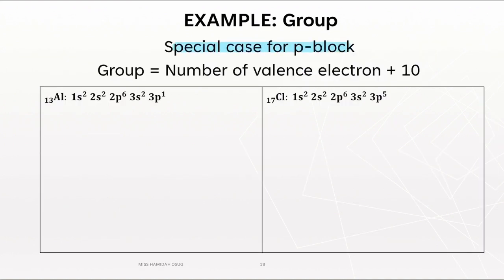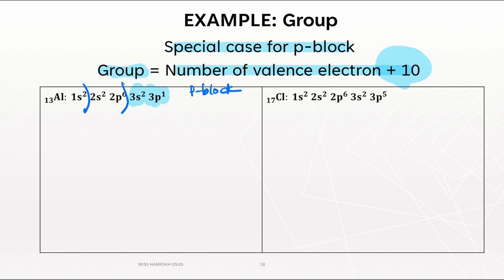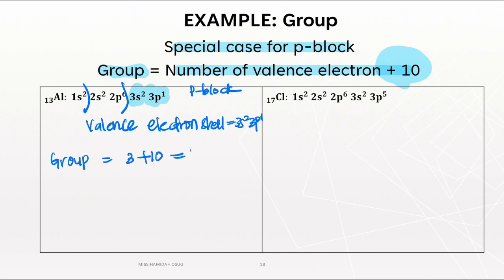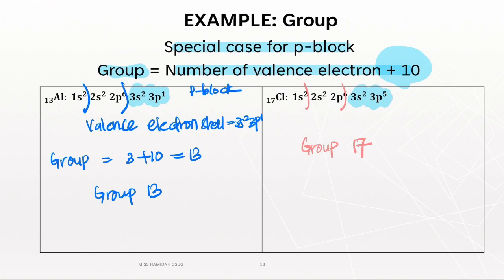There is a special case for the P block: the group number equals the number of valence electrons plus 10. For aluminium 13, the valence electron shell is 3S2, 3P1 — it belongs to the P block. The valence electron count is 2 plus 1 equals 3, so the group is 10 plus 3 equals group 13. For chlorine, the valence electron shell is 3S2, 3P5, so the valence electron count is 7, and chlorine belongs to group 17.